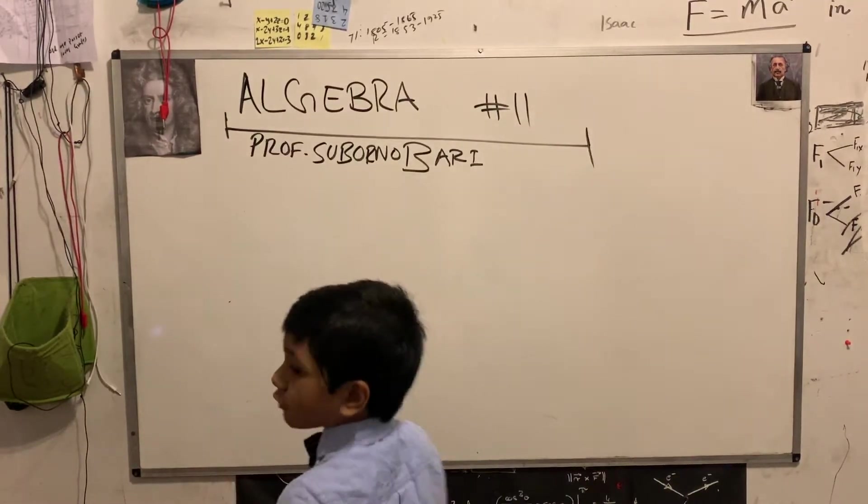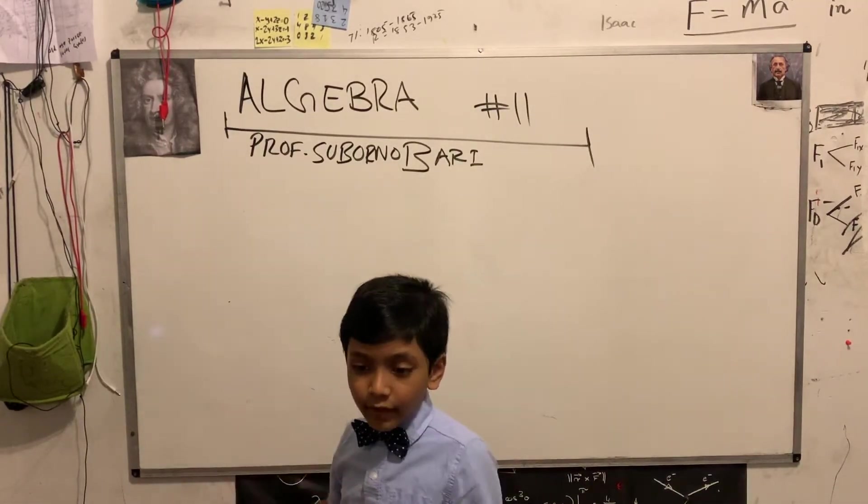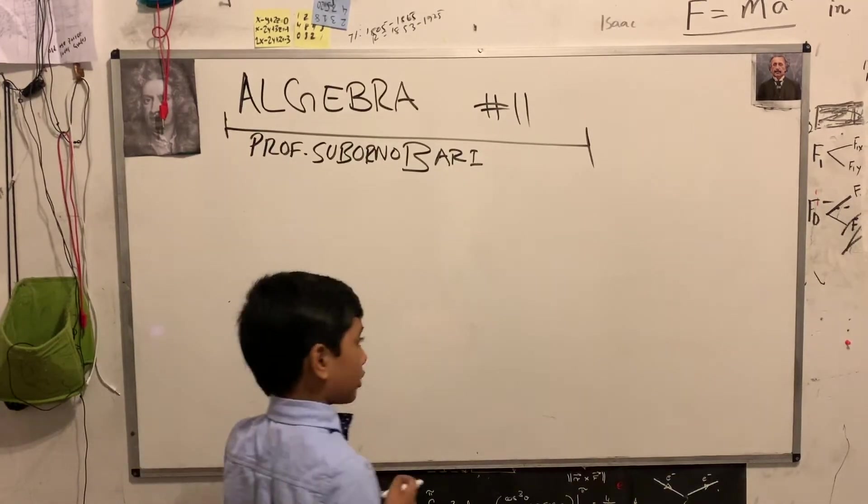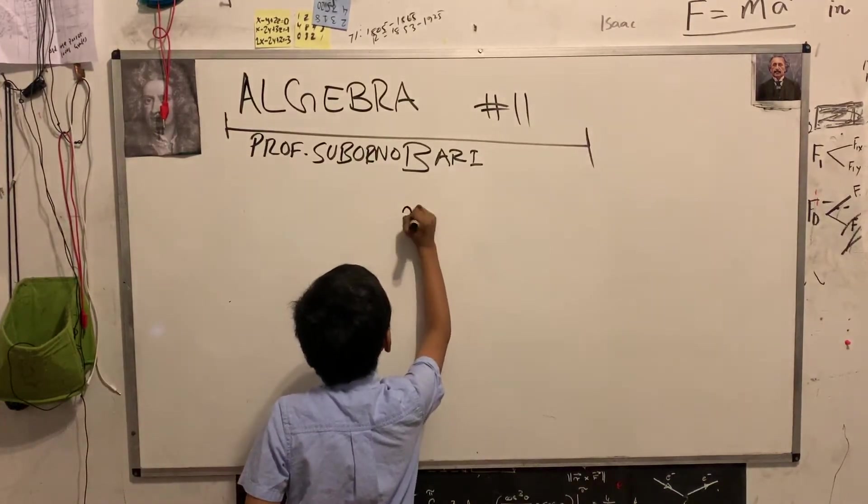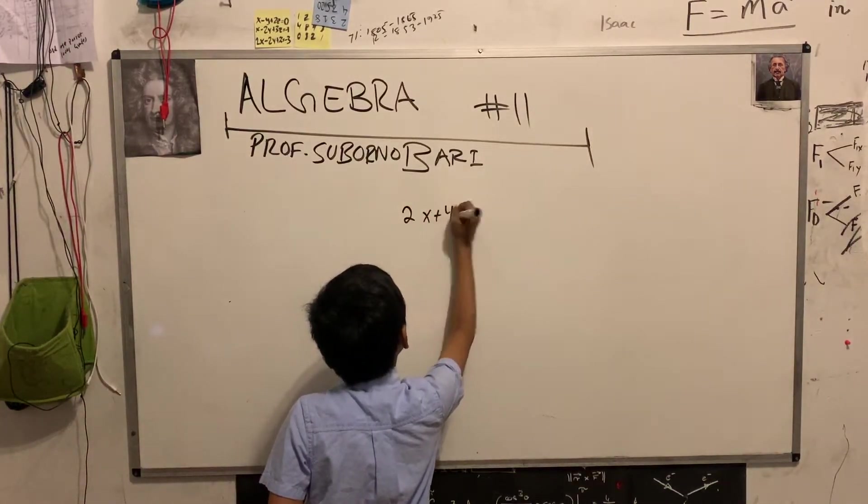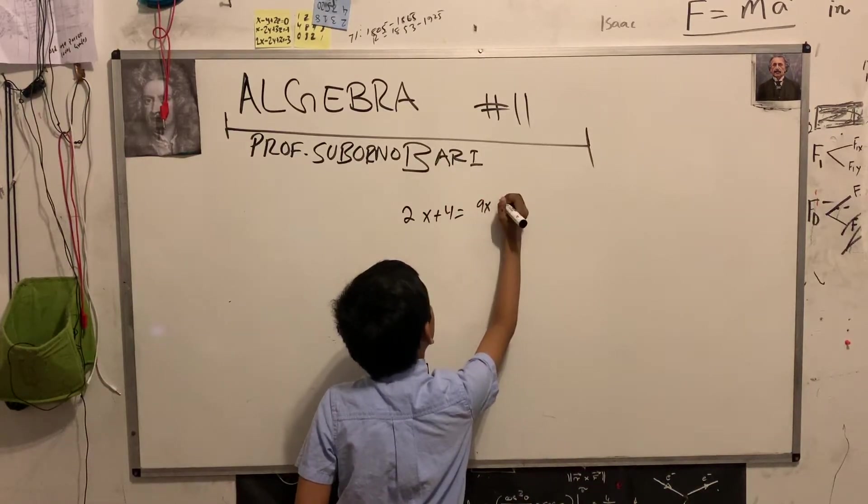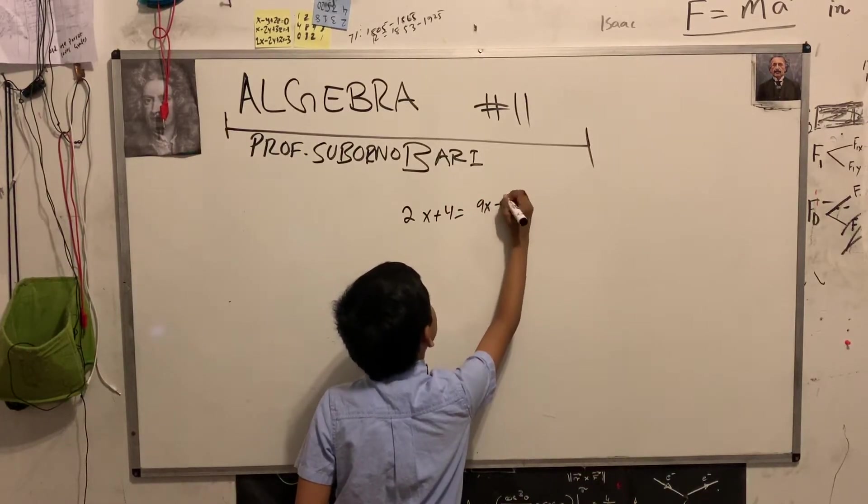So, solving equations with the variables on both sides. 2x plus 4 equals 9x minus 16.